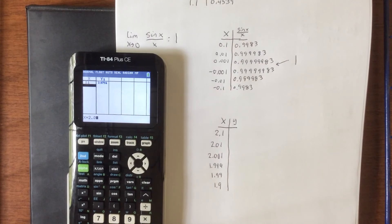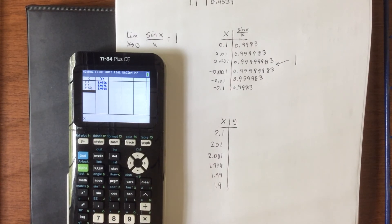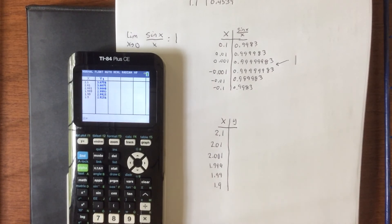So 2.1, 2.01, 2.001, 1.999, 1.99, and 1.9.